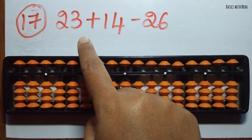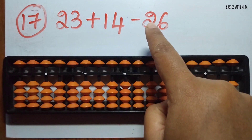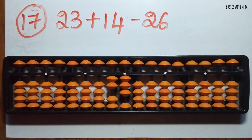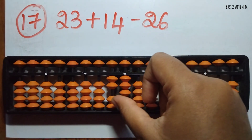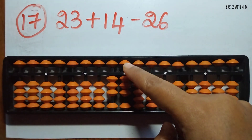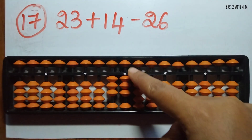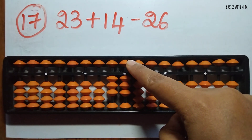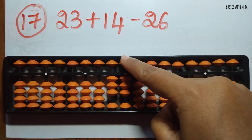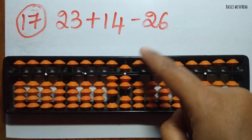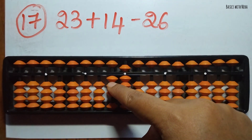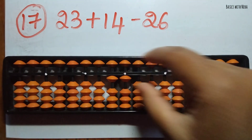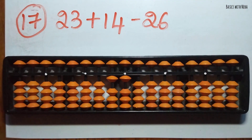Seventeenth sum: 23 plus 14 minus 26. First take 23. Now we should add 14 — add 1 in the 10's rod. To add 4 in the 1's rod, the beads are not available so I'm going to use the small friend formula for plus 4: plus 4 equals plus 5 and minus 1. Then minus 26 — minus 2 can be done in the 10's rod and minus 6 can be done in the 1's rod. The answer is 11.